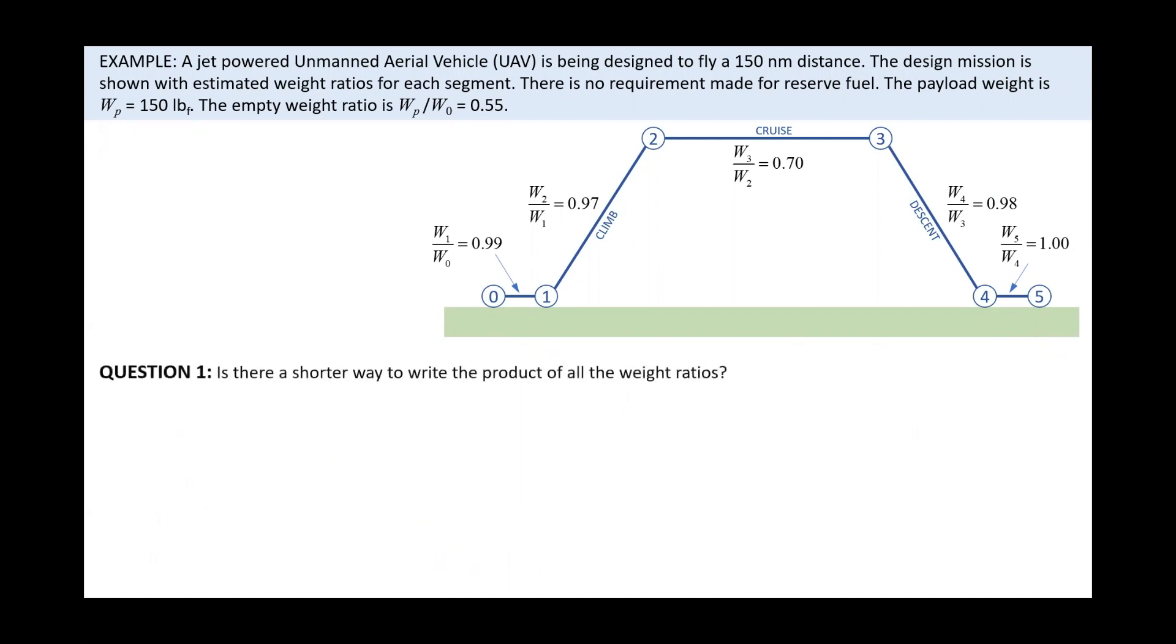Finally this. There are at least three questions that this may engender. First, is there a shorter way to write the product of all the weight ratios? Our mission here is super simple. Many missions require a long chain of weight ratios, making this form unwieldy. The answer is yes, and we do this using the product symbol, capital Pi, as shown here.